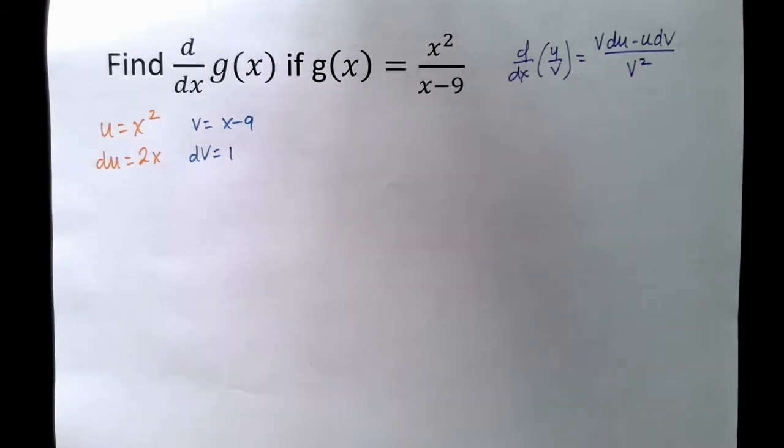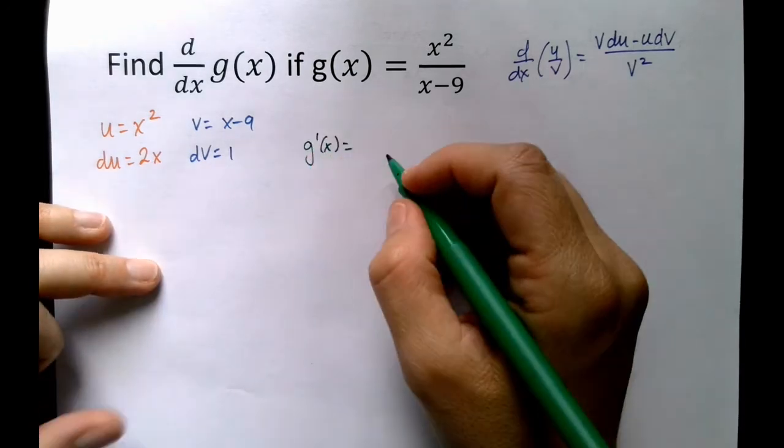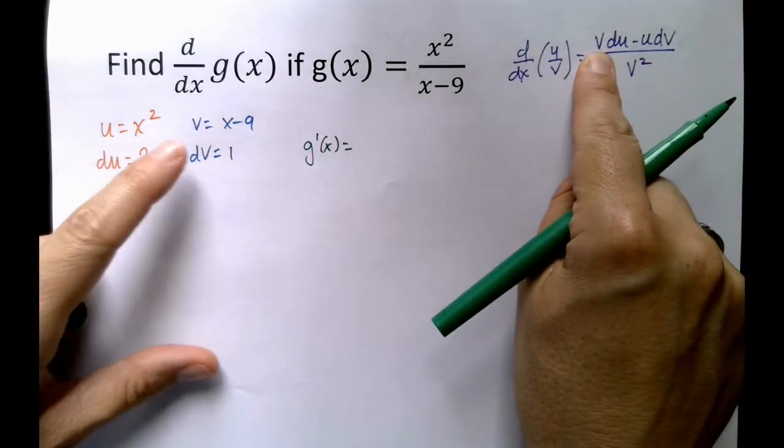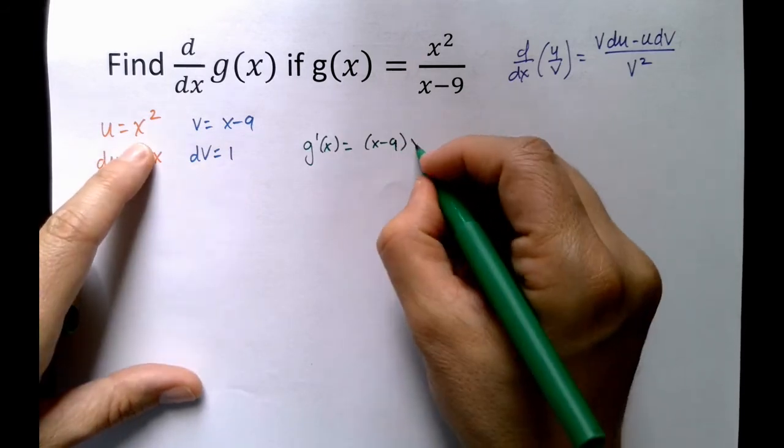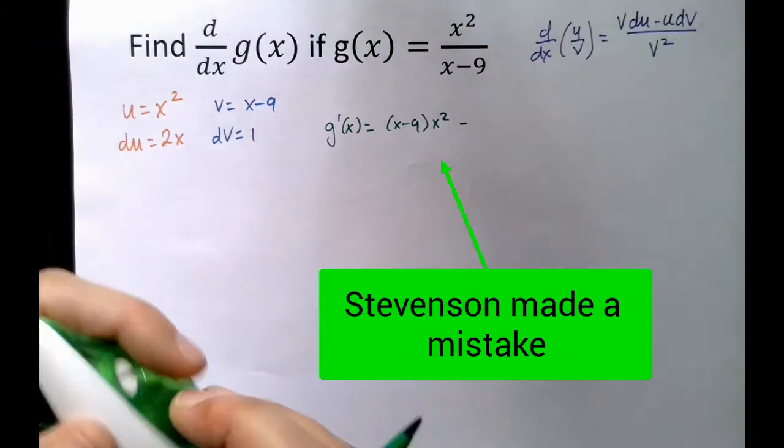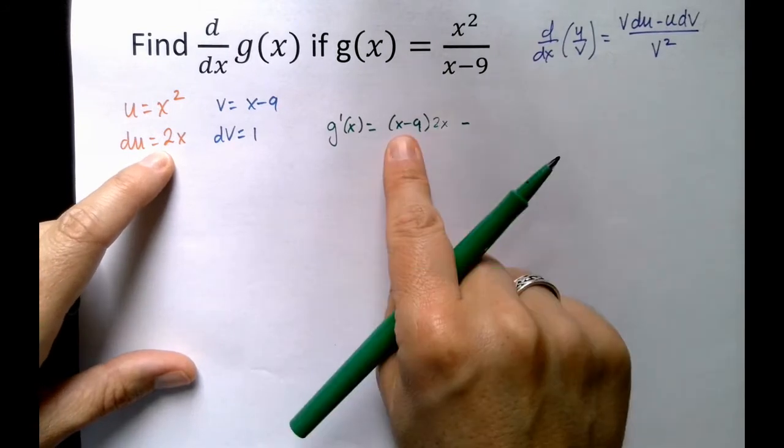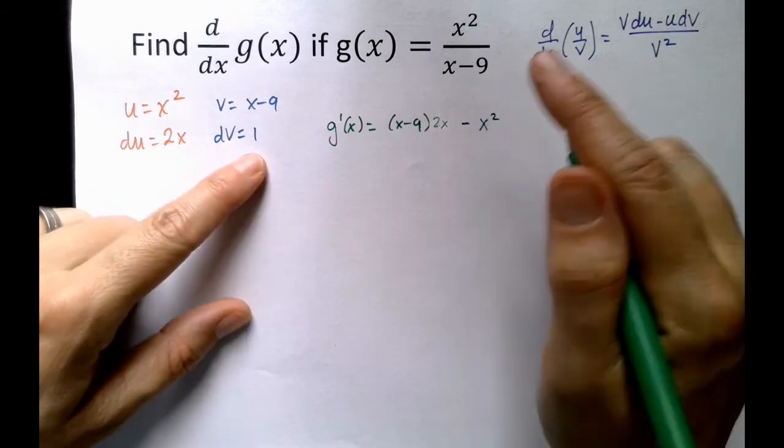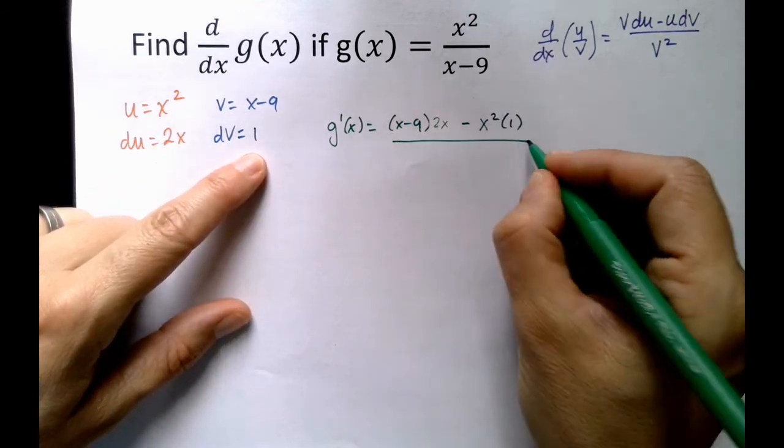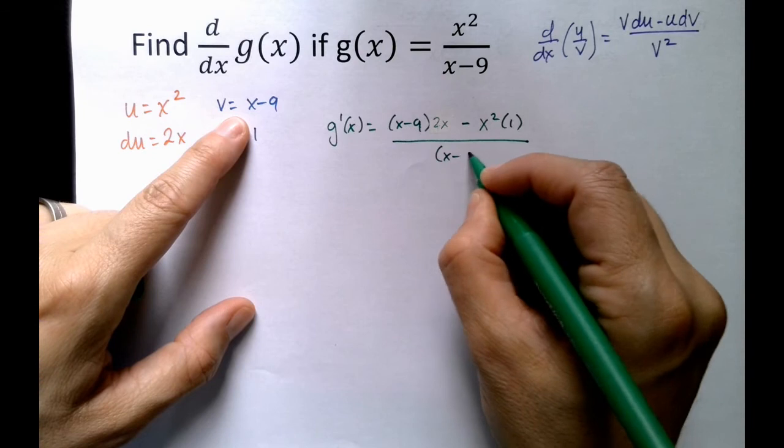Now, let's put it all together. Here we go. v times du, v du minus u dv all over v squared.